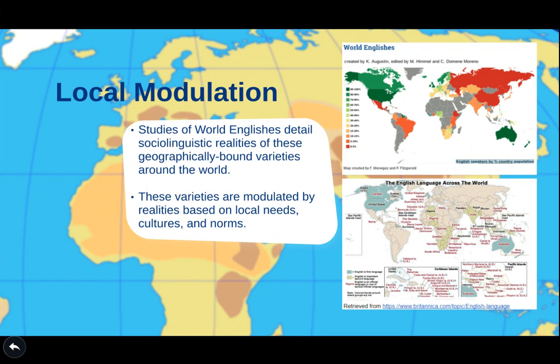We can see in the graph of world Englishes that there are percentages of countries that speak English, and then below that, English language across the world pinpoints and details a wide variety of different varieties. But we know, for example, in the United States, that we have other geographic varieties as well, like Southern English, Boston English, and New York English. So these are not inclusive whatsoever.